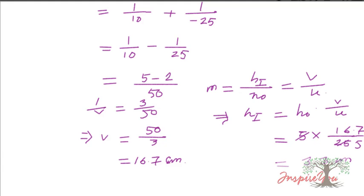The nature of the image: the image is real and inverted. The negative sign in the height (minus 3.3 centimeters) confirms it is inverted. So the image is real, inverted, and diminished.